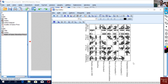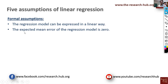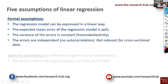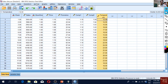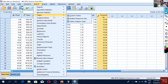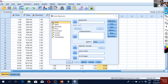We can see that for most of the data there is some kind of linearity, so our first assumption is met. The next assumption is that the expected mean error of the regression model is zero. To check this we need to estimate the regression model, and in doing so we can check several assumptions at once — killing four birds with one shot.